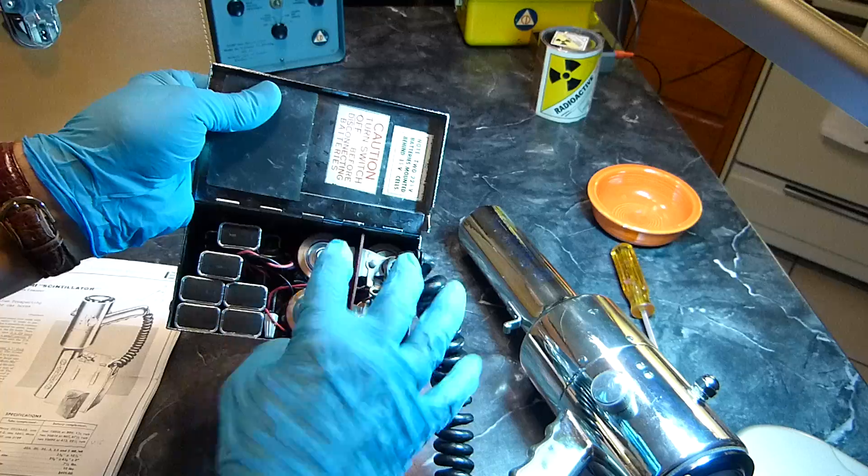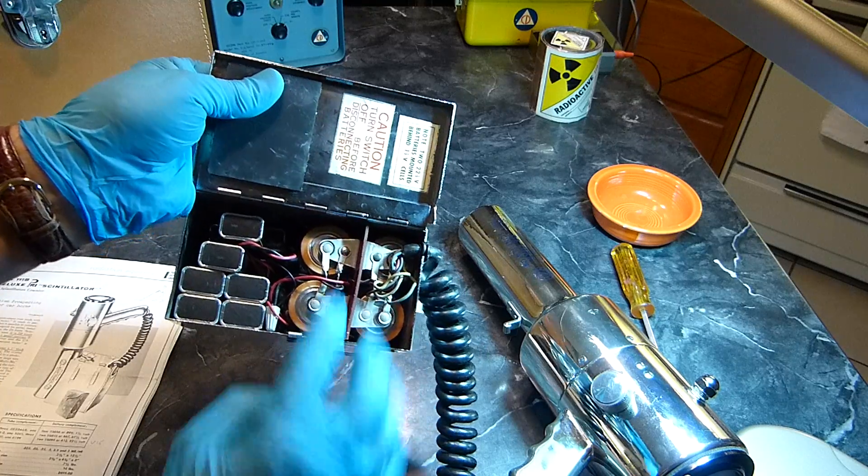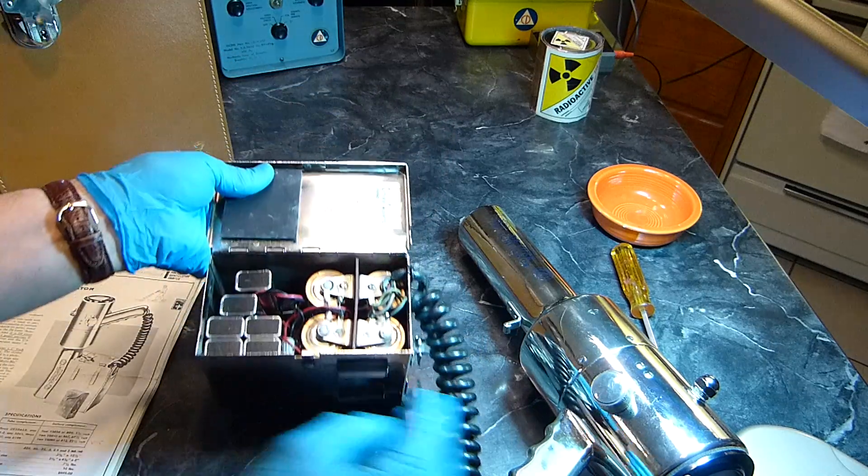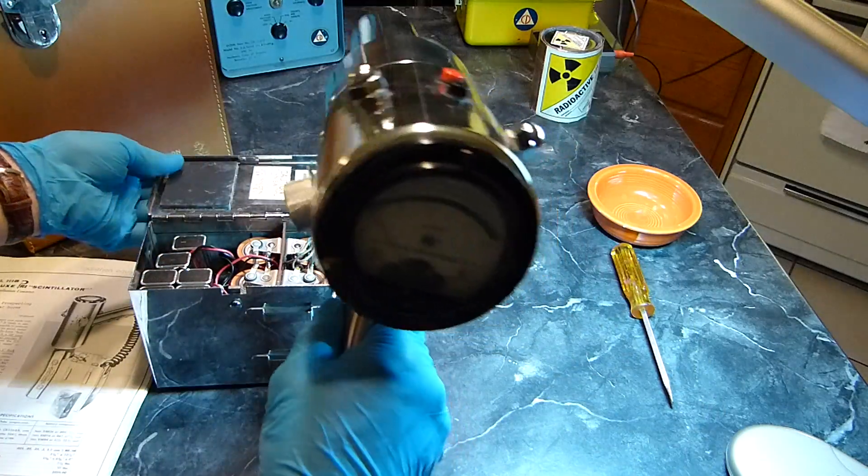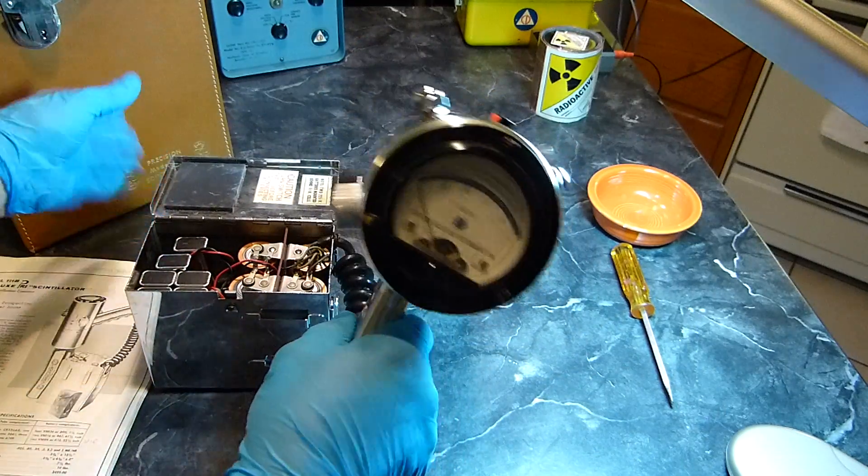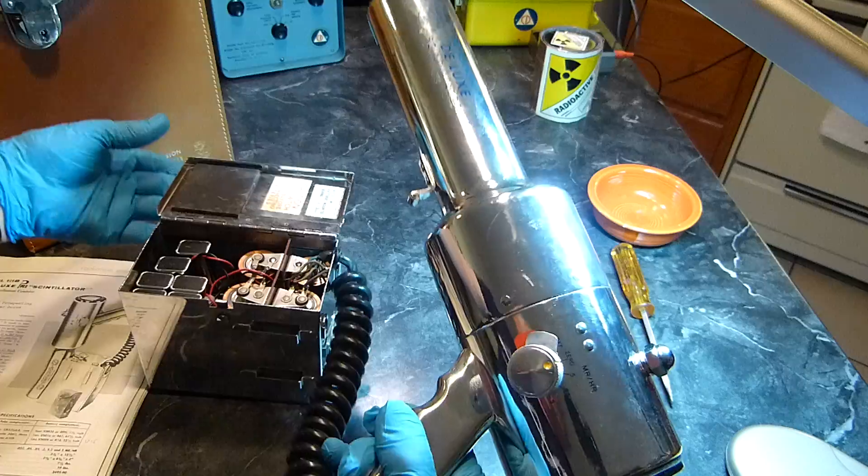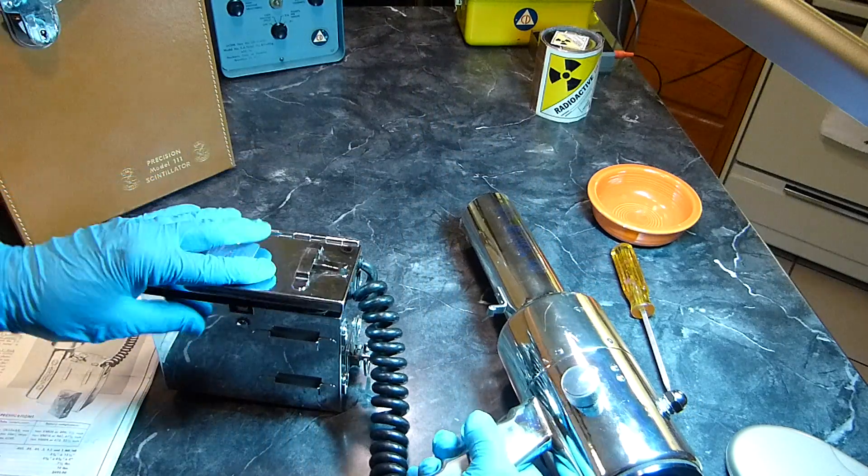That's how you get your 67.5, your 22.5, and there's your four 1.5 volt D cells. These are for the filaments of the tubes in this thing. This thing is full of little tiny vacuum tubes. It's just gorgeous. I don't think this thing has ever been used.